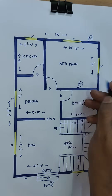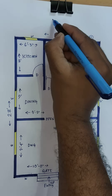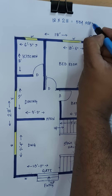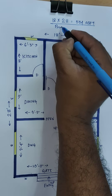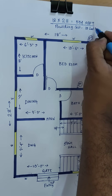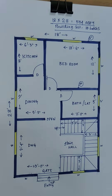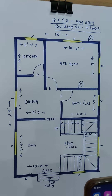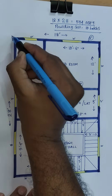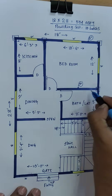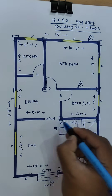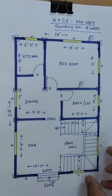Inside wall 5-inch wall — all walls with 5 inch, okay. 18 into 28 and 4 square feet. Total building cost: 10 lakhs, okay. And column position — column position: first 1, 2, 3, 4, 5, 6, 7, 8, 9, 10, 11, 12 — 12 numbers of columns.